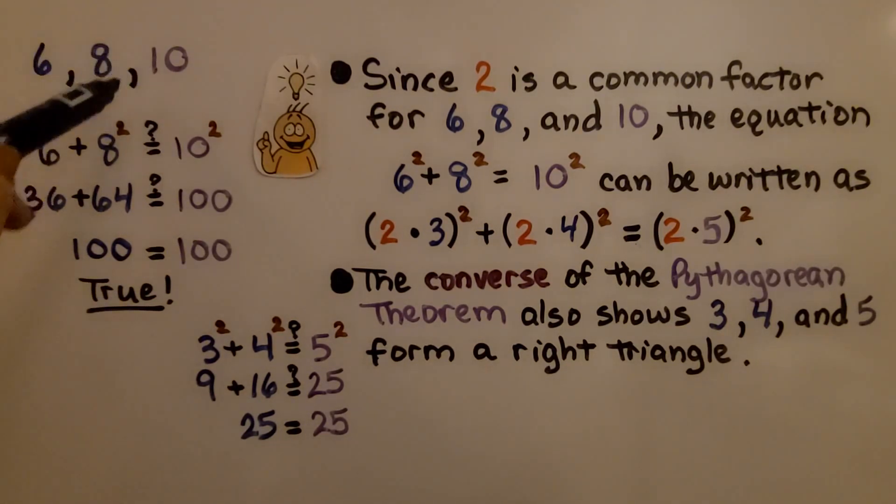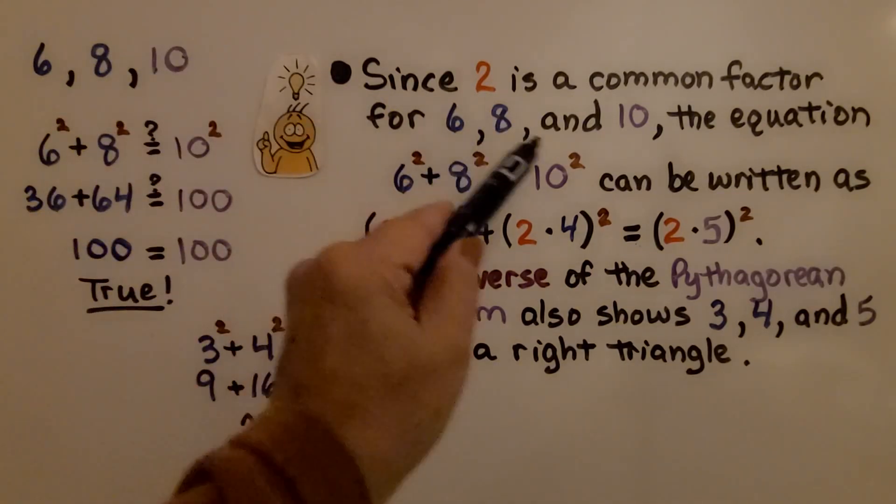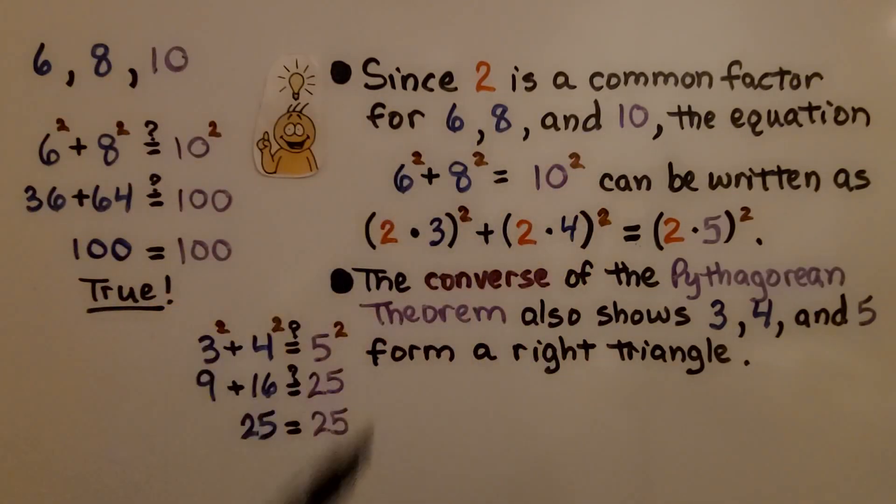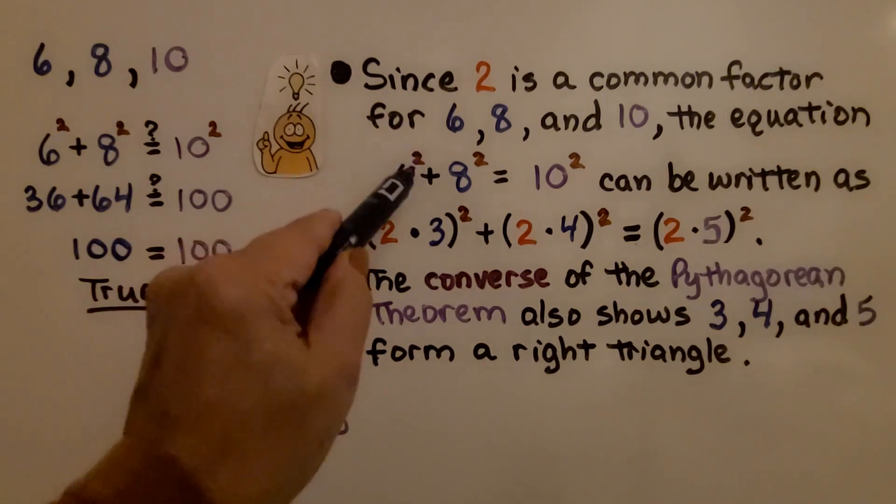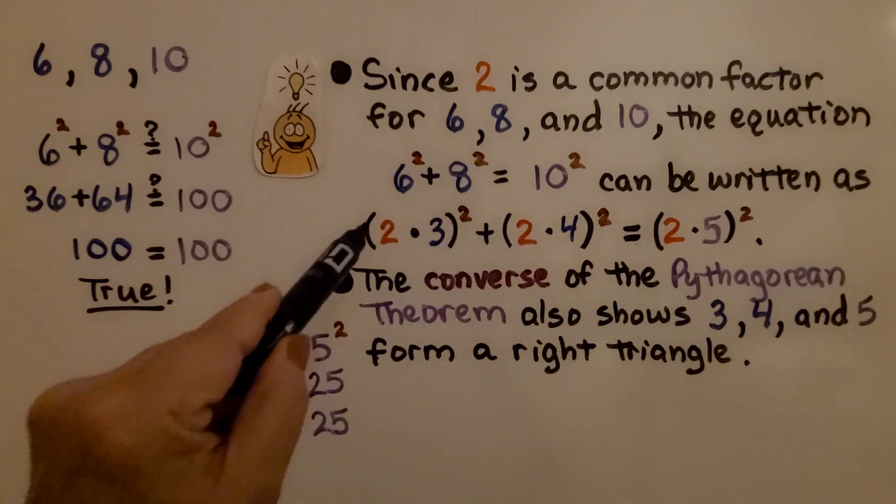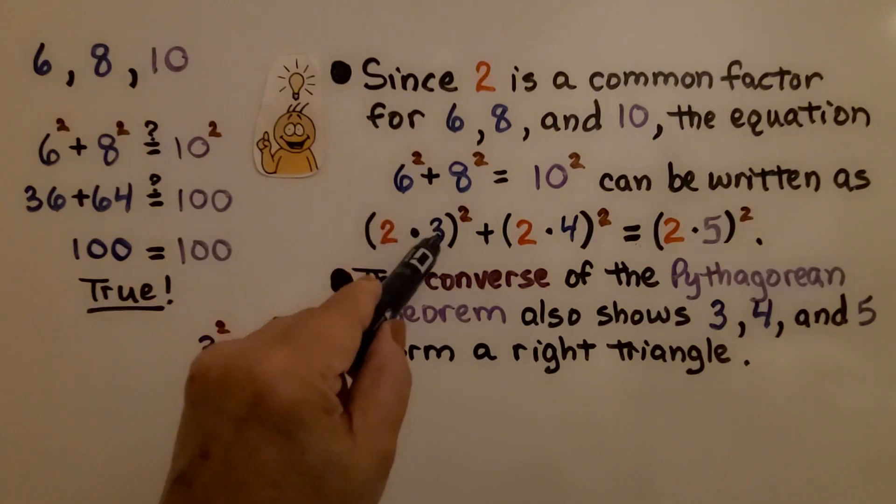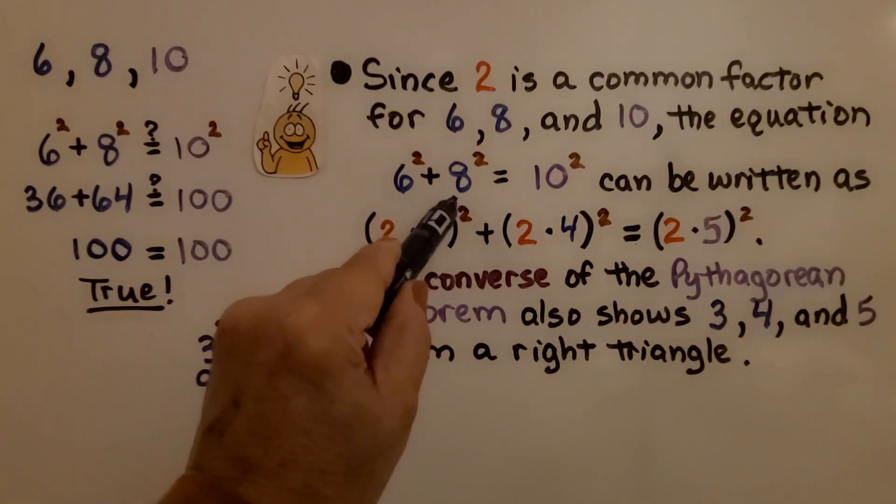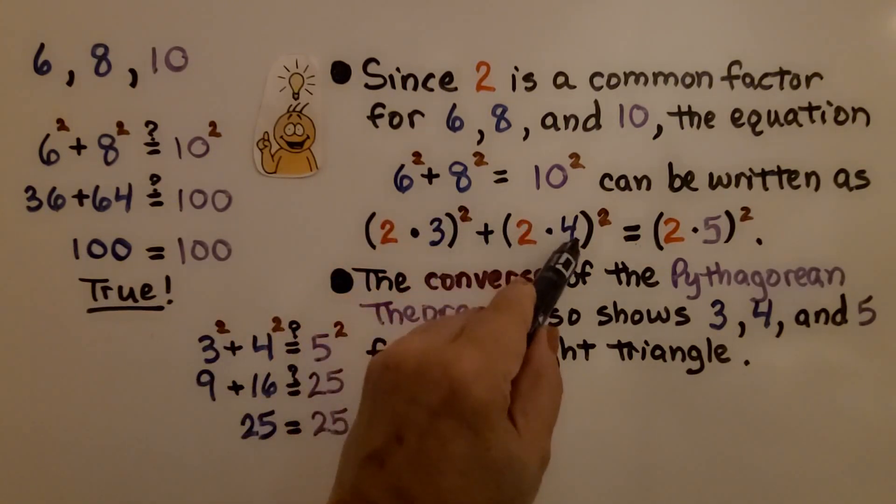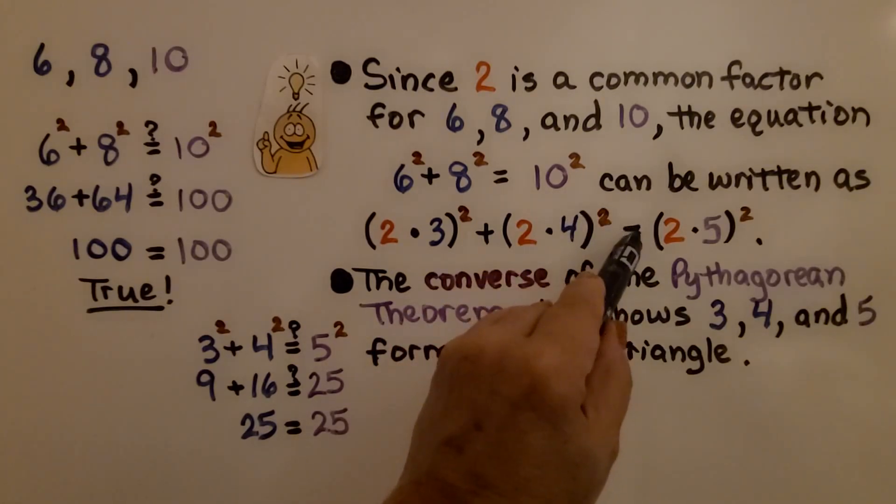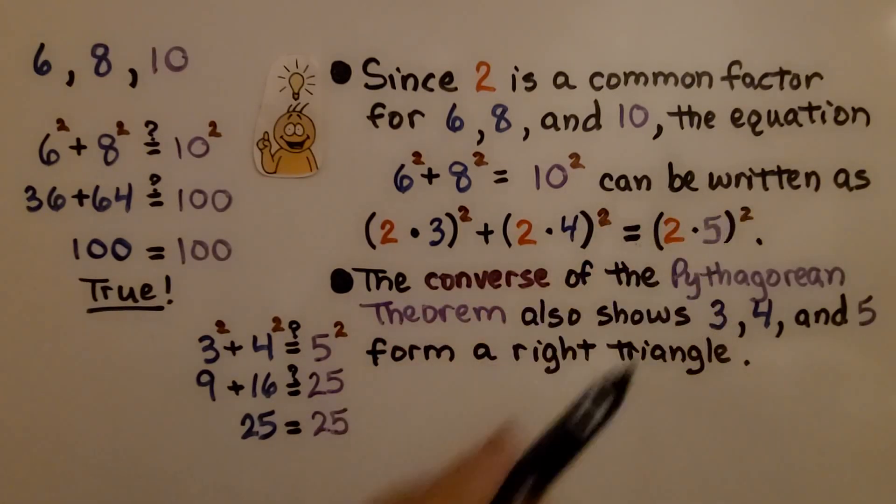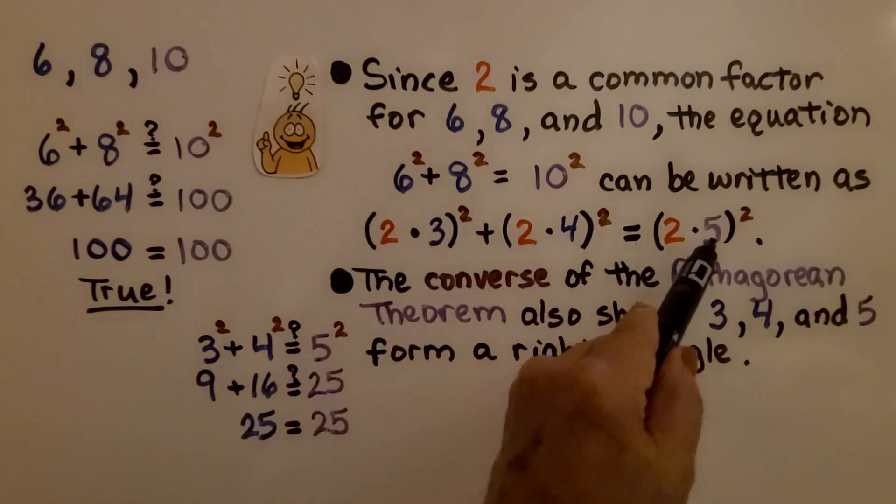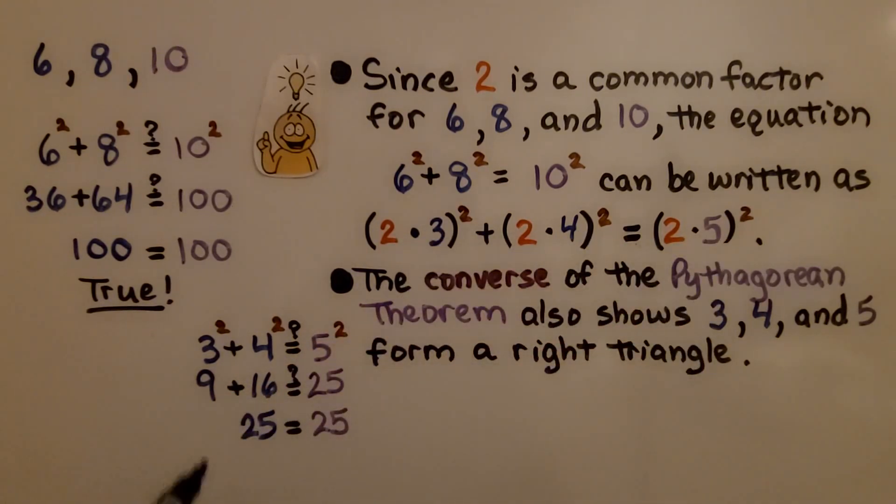Now, looking at these three side lengths, since 2 is a common factor for 6, 8, and 10, the equation 6 squared plus 8 squared equals 10 squared can be written as 2 times 3 raised to the second power plus 2 times 4 raised to the second power. The converse of the Pythagorean theorem also shows that 3, 4, and 5 form a right triangle.